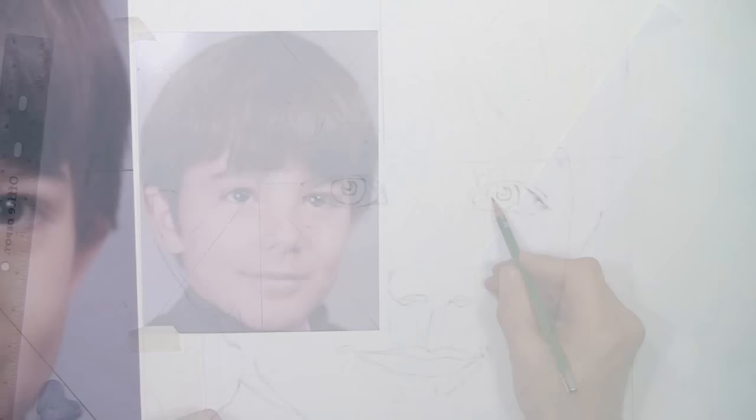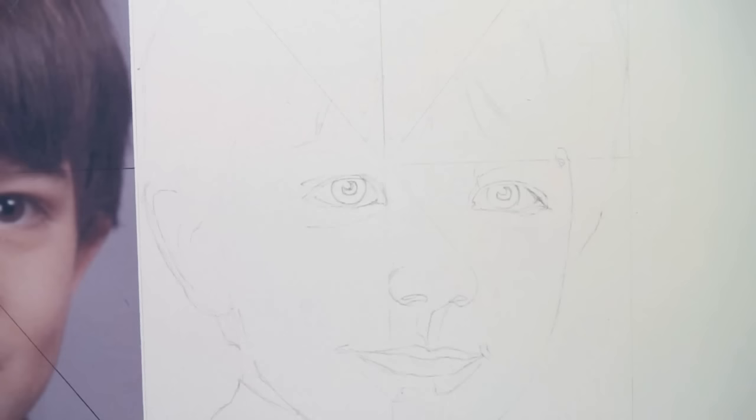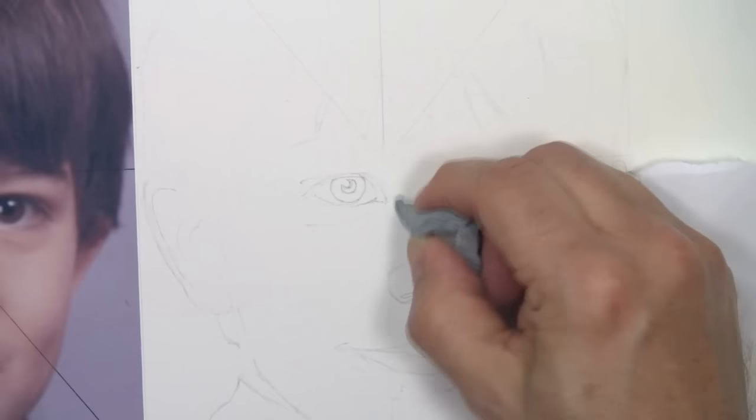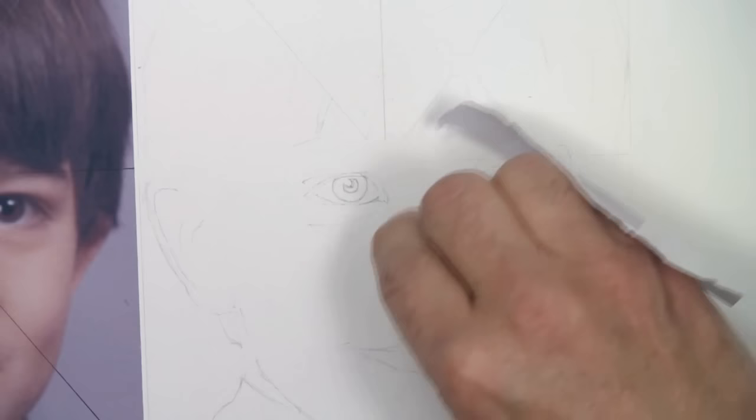Now, since you do have some of these lines, put them on lightly so you can erase them later. So I just use my kneaded eraser and I can back out these lines. So once I start shading, those won't show up through the shading on my portrait.